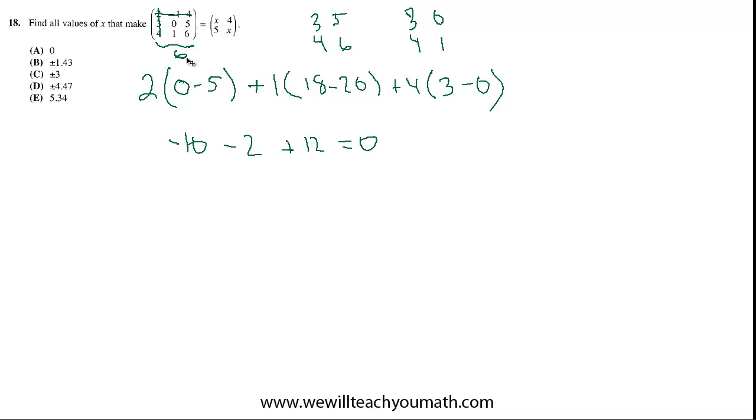Now we have the 2x2 determinant, which is just solved as... so this is all for the 3x3. The 2x2 determinant on the right side is solved by doing x squared minus 20.